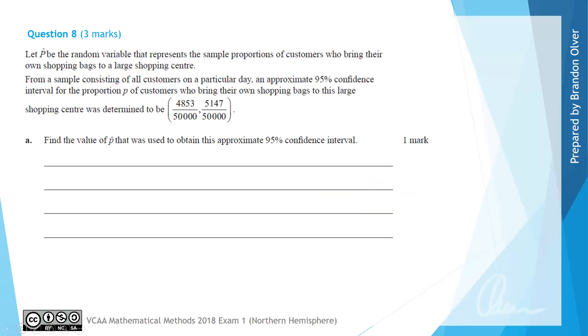For Question 8, let P hat be the random variable that represents the sample proportions of customers who bring their own shopping bags to a large shopping centre. From a sample consisting of all customers on a particular day, an approximate 95% confidence interval for the proportion P of customers who bring their own shopping bags to this large shopping centre was determined to be the following interval.